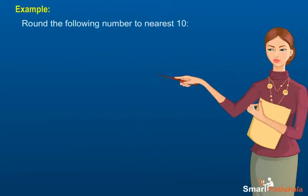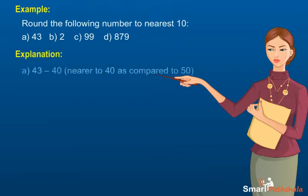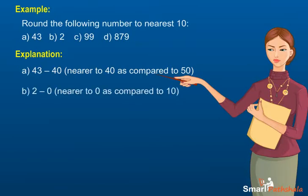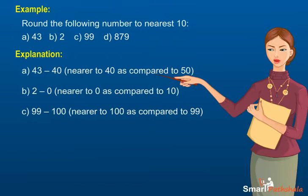Explanation: a) Since the units place digit is 3, 43 is rounded off as 40. b) Since the units place digit is 2, 2 is rounded off as 0. c) Since the units place digit is 9, 99 is rounded off as 100.